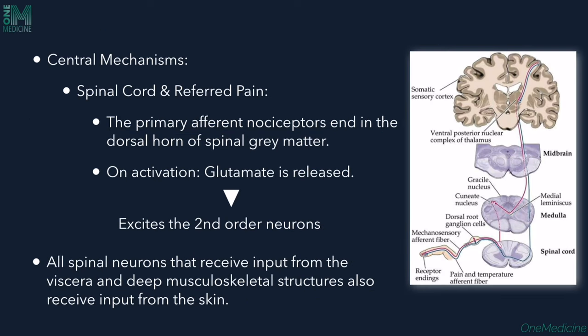For the central mechanisms, the nociceptors carry pain sensation into the dorsal root ganglion, which enters the spinal cord. The signals travel through lateral and anterior spinothalamic tracts, into the medulla and midbrain, then to the thalamus as a relay station, and finally to the cortex where each body part is represented. Pain is perceived at the level of the cortex.